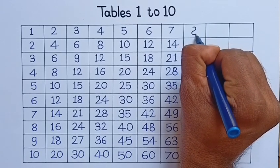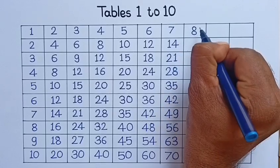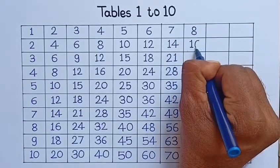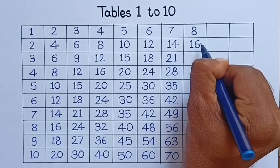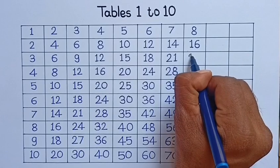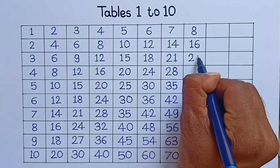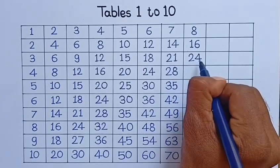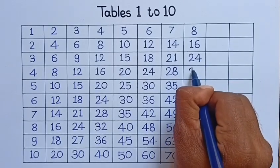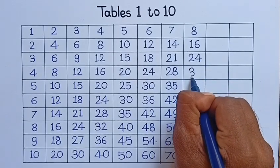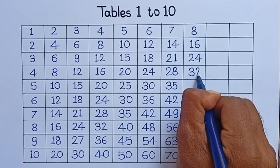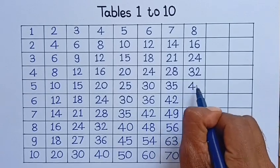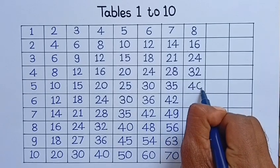8, 1 is 8. 8, 2 is 16. 8, 3 is 24. 8, 4 is 32. 8, 5 is 40.